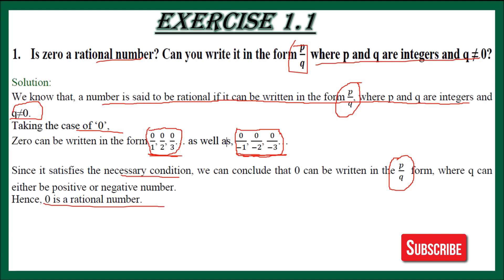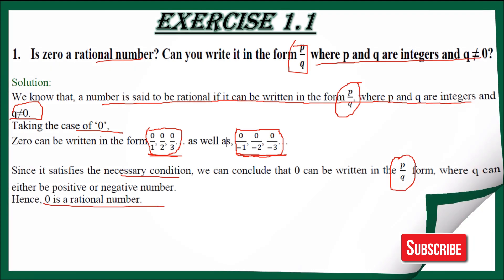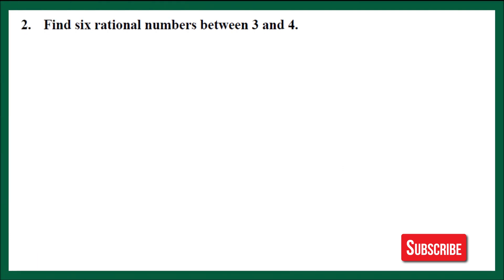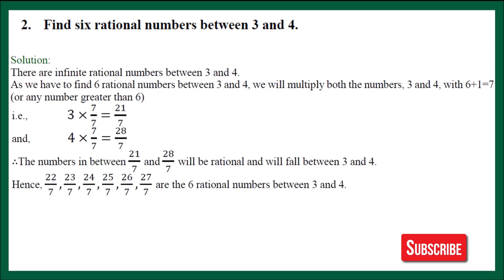Let's discuss the next question. Question number 2: Find 6 rational numbers between 3 and 4. In this question we have to find 6 rational numbers between 3 and 4. As we have learned, between any two rational numbers there are infinitely many rational numbers possible. There are infinite rational numbers between 3 and 4.